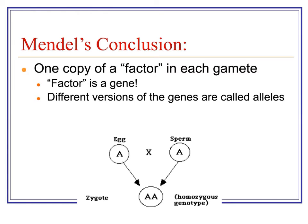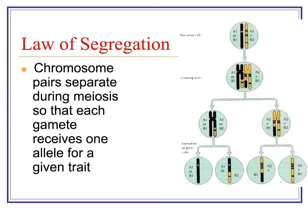The results led Mendel to the conclusion that there was one copy of a factor — what we now call a gene — in each gamete produced by the plants. Different versions of these genes are called alleles. The egg has one copy of every chromosome, the sperm has one copy, and those come together. If the egg and sperm both carry the same allele for a trait, then the genotype for that trait would be homozygous dominant. This is the basis of Mendel's law of segregation: chromosome pairs separate so that each gamete gets one allele for any given trait.